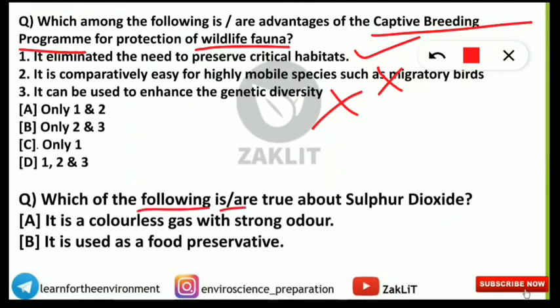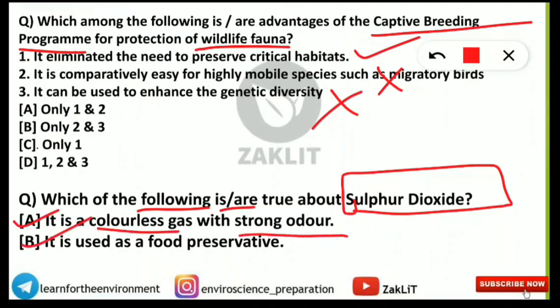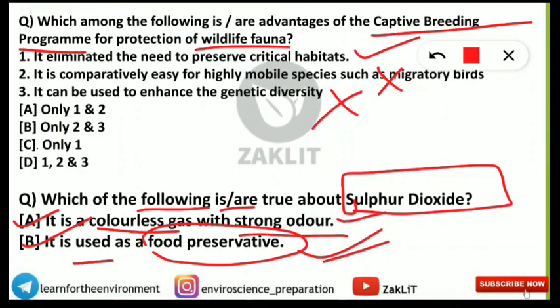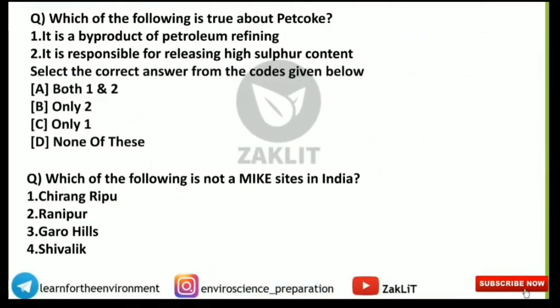The next question asks which of the following is true about sulfur dioxide gas. Both statements are correct: SO₂ is a colorless gas with a strong pungent smell, and it is also used as a food preservative. However, when its concentration increases in the body it can cause harm. The following question asks about pet coke — which statements about pet coke are true.